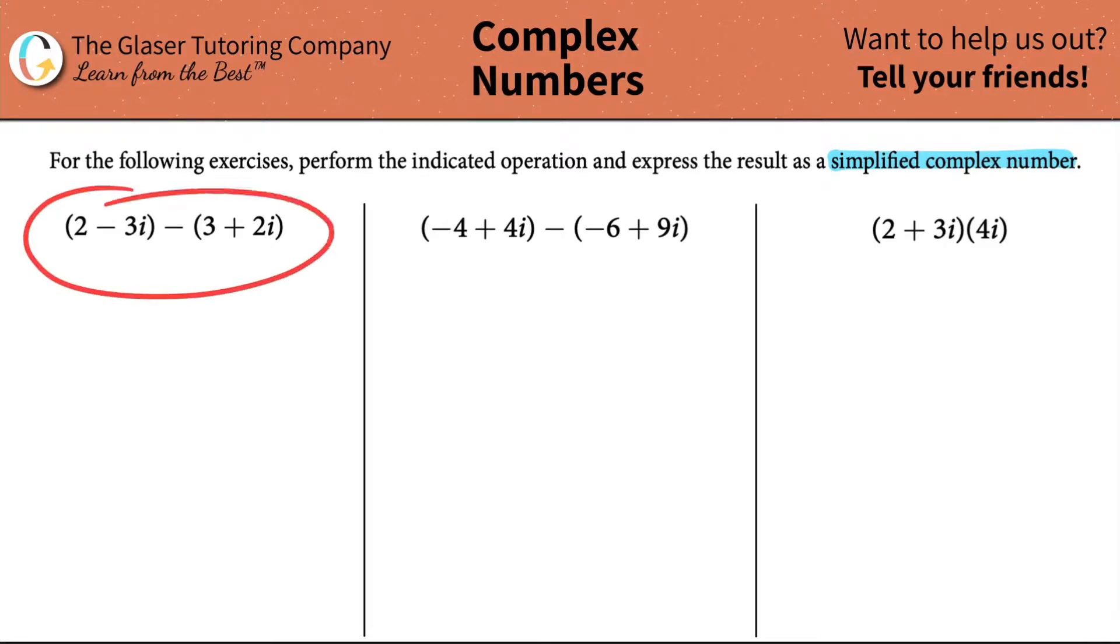Let's work with the first one. We have to do (2 - 3i) and that's all being subtracted by (3 + 2i). In this case, we're just taking this and we're subtracting it by this.